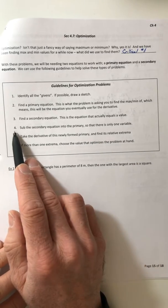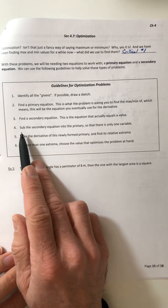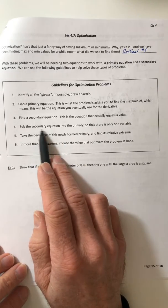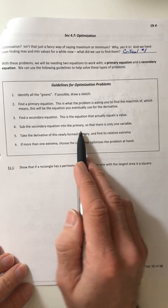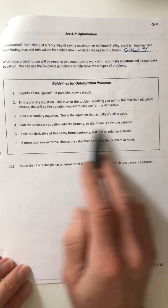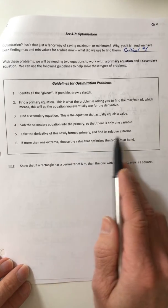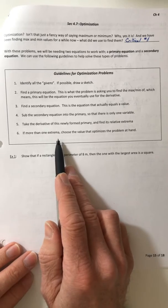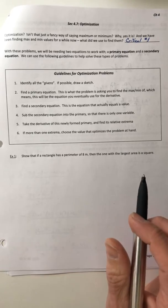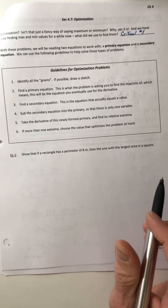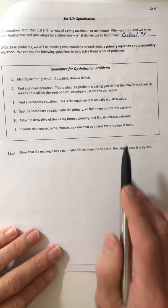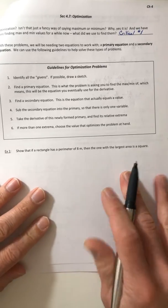What you're going to do with that secondary equation is solve it for a variable, and you get to choose most of the time, then substitute it into the primary so that the primary only has one variable. Once you've done that, then you can take the derivative and find its relative extrema. If there's more than one extrema, choose the value that optimizes the problem at hand, and it's usually kind of common sense.